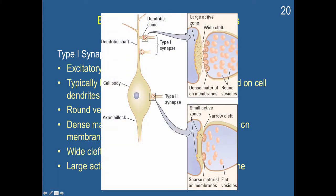And here's some of the examples. So this would be a type one synapse, and this would be a dendritic spine, or here you could have a dendritic shaft. Here's the differences in features. You have a wider cleft, round vesicles, dense material on the membranes, so lots of neurotransmitters would be released, and you'd have a large active zone for receiving those neurotransmitters.